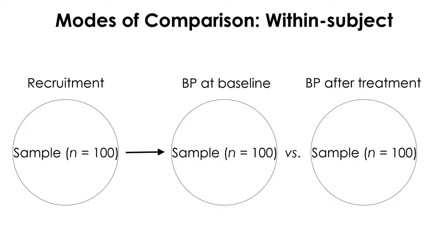With the within-subject design, each individual acts as its own control, so subject-to-subject variability between groups can be minimized compared to the between-subject design. This design is also more effective in terms of number of subjects required and power to detect differences. However, when the effect of the first experimental manipulation is permanent or irreversible on the outcome variable, subjects cannot be tested again on the second manipulation. In Jamovi, a paired samples t-test is used to test the difference between groups when within-subject design is used.